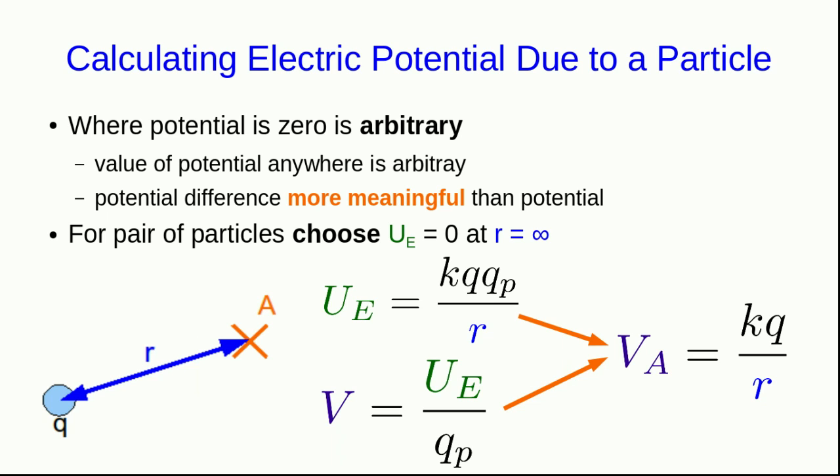And so from now on, we'll tend to just think of a point A near any charge q, and we can simply calculate the potential there due to the charge q. Note that it only depends on r, and so it'll be the same everywhere on a sphere of radius r centered around the charge q.